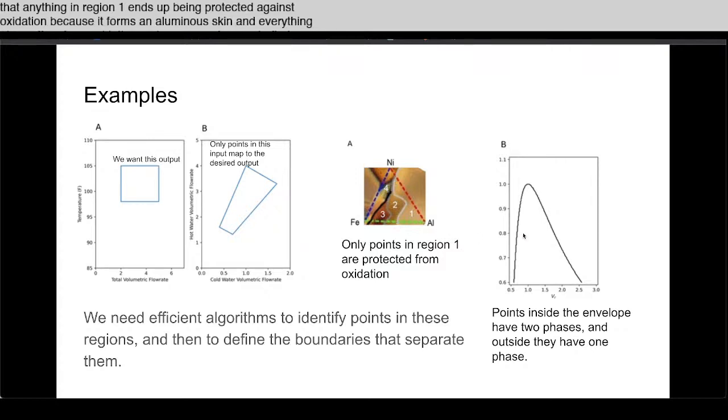The third example is looking at a van der Waals equation of state where inside this envelope you have a two-phase region and outside you have a one-phase region. We would like to be able to make samples that find this boundary for us.